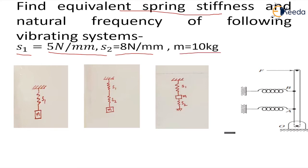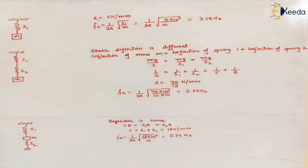In the first case, a mass is simply suspended from a single spring, so the spring constant remains the same as there is only one spring. We know the formula for the natural frequency, which is 1 upon 2π times the square root of S upon M, where S is the spring constant and M is the mass. We know all the values, we place them, and this gives us the answer.